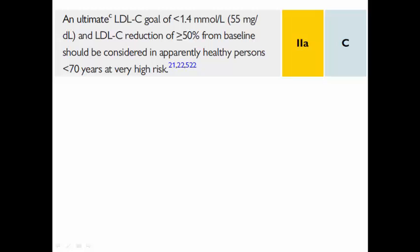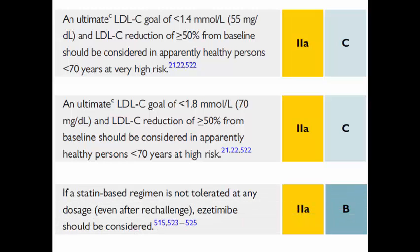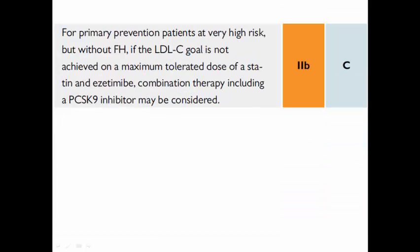If the calculated risk is high risk, the LDL goal is less than 70 mg/dL with more than 50% reduction. If the statin is not tolerated at any dose, ezetimibe can be considered — this is class 2A. But if this patient is at very high risk without familial hypercholesterolemia and still doesn't reach the LDL goal on statin and ezetimibe, PCSK9 inhibitors can be combined, but this is class 2B because we are speaking about primary prevention.